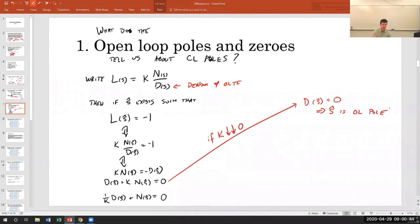So check this out. What did we just say? We just said that if K is small, the closed loop poles are also open loop poles.